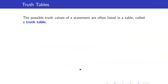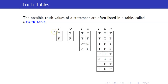Since we are interested with the truth values of statements, we look at all the possible truth values, and we call that our truth table. If you have just one proposition, the only possibilities are true and false. If you have two propositions P and Q, you will have four possibilities. And if you have three propositions, you will have eight possibilities.